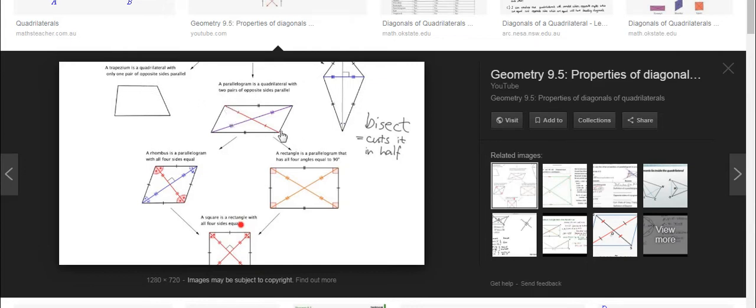This diagonal cuts it into two triangles, this into two triangles, same here. Every diagonal will cut the quadrilateral into two triangles.